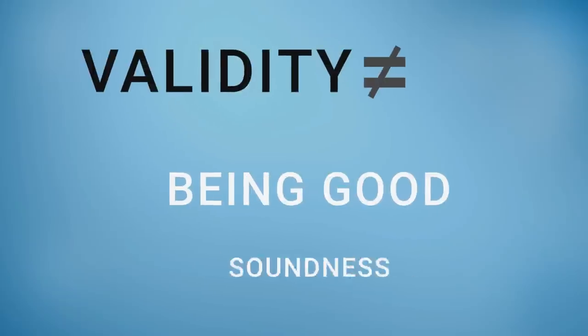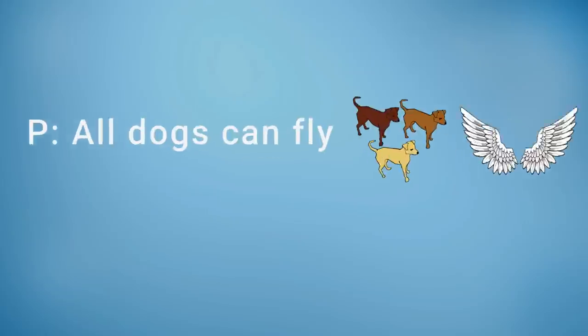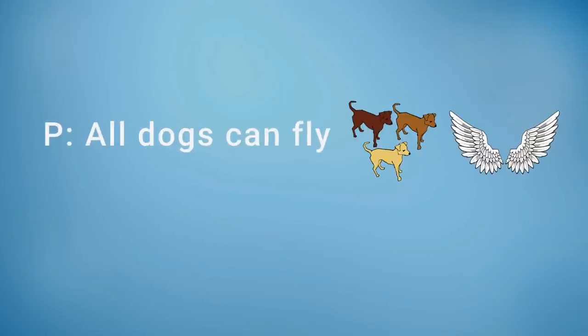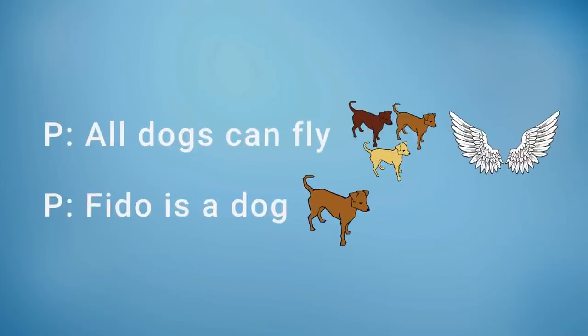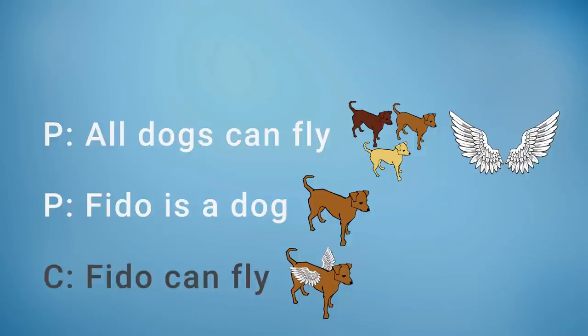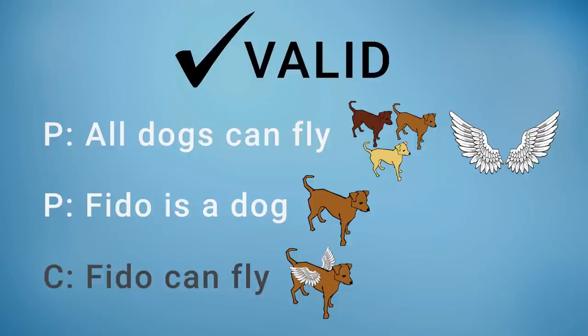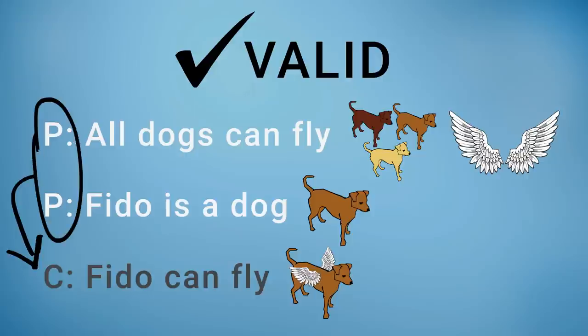To say that an argument is valid is not the same as saying that the argument is good or sound. For example, imagine the premise that all dogs can fly, and the second premise that Fido is a dog. The conclusion would be that Fido can fly. Although it might seem counterintuitive, this is a valid argument. An argument is valid if the truth of the premises would guarantee the truth of the conclusion. If it is true that all dogs can fly, then it must be true that Fido the dog can fly.